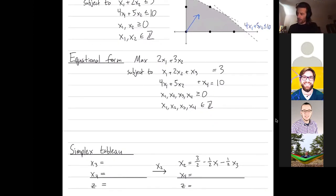And then we can start doing the simplex method. My original basis will just be x3 and x4 as my basic feasible solutions. So in my first simplex tableau, I solve for x3: x3 equals 3 minus x1 minus 2x2. Solve for x4, that's 10 minus 4x1 minus 5x2. And then the function that I'm trying to optimize is 2x1 plus 3x2.